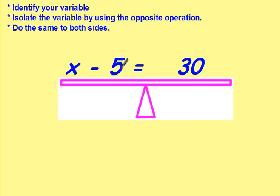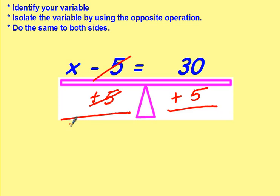Again, x minus 5 equals 30. x is your variable. It's being subtracted by 5. The opposite of subtracting 5 is adding 5. What you do to one side, you want to do to the other. A positive 5 and a negative 5 will cancel each other out,